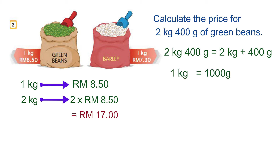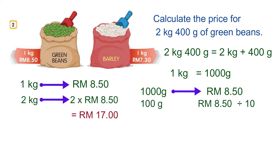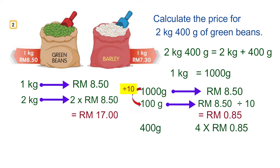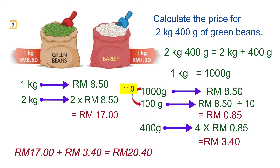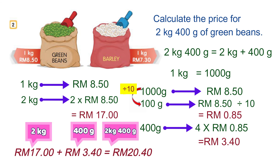Now let's find the cost for 400 grams. Convert the unit first — convert 1 kilogram to 1,000 grams. The cost for 1,000 grams is 8.50 ringgit. So find the cost for 100 grams: 1,000 divided by 10 gives 100. Do the same operation for 8 ringgit 50 cents — divide by 10, we get 85 cents. So the cost for 400 grams is 3 ringgit 40 cents. Now total up the cost of 2 kilograms and 400 grams. The price of 2 kilograms 400 grams of green beans is 20 ringgit 40 cents.